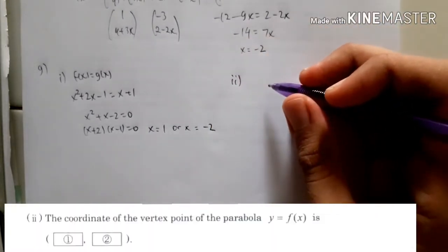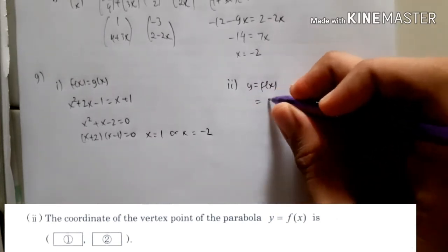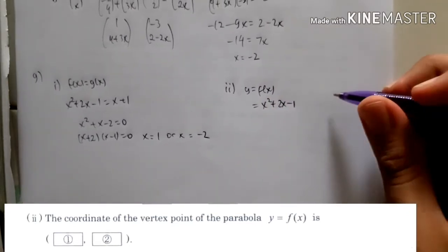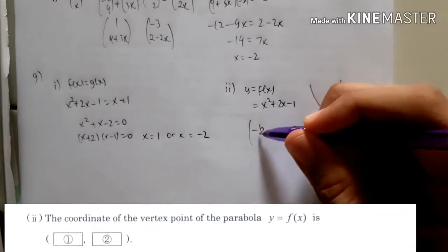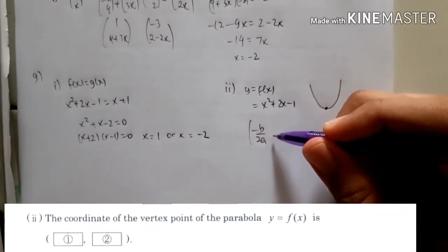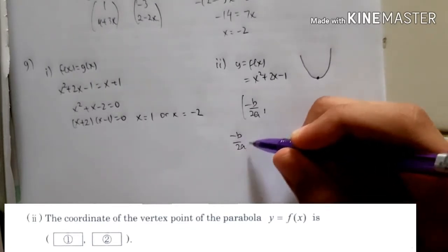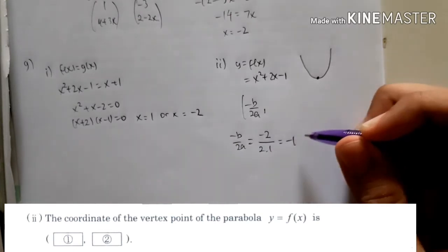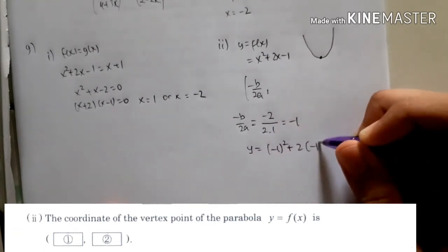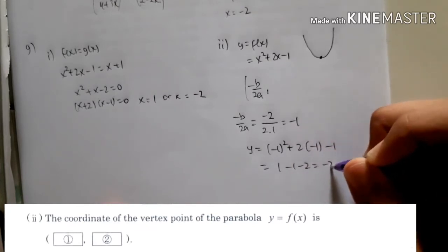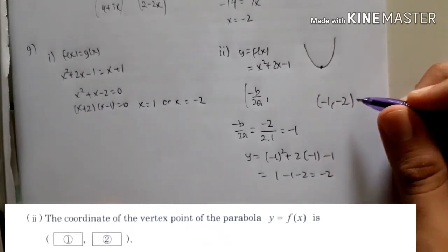For part 2, find the coordinate of the vertex point of the parabola y equals f(x). The vertex is the maximum or minimum point of the graph. We use the formula x = −b over 2a, which is −2 over 2 times 1, giving minus 1. Substituting minus 1 into y: y equals (−1)² plus 2(−1) minus 1, which is 1 minus 2 minus 1 equals minus 2. So the vertex coordinate is (−1, −2).